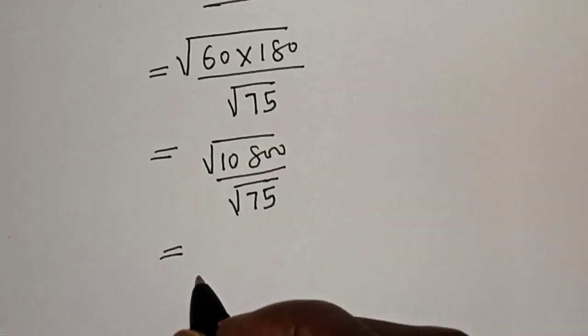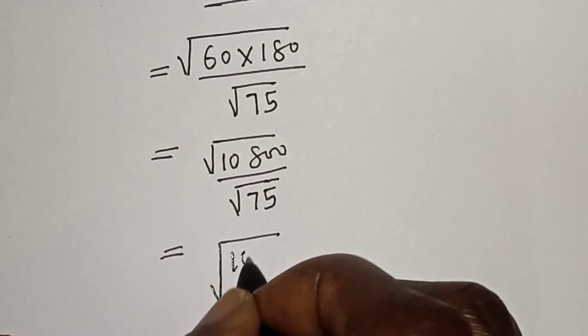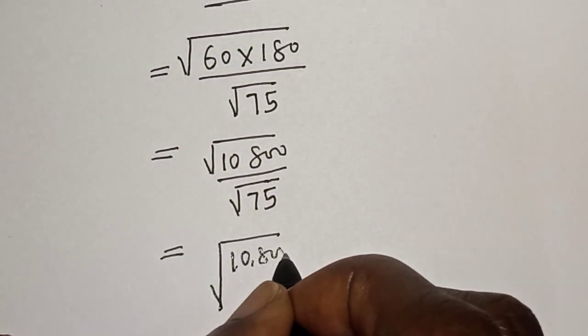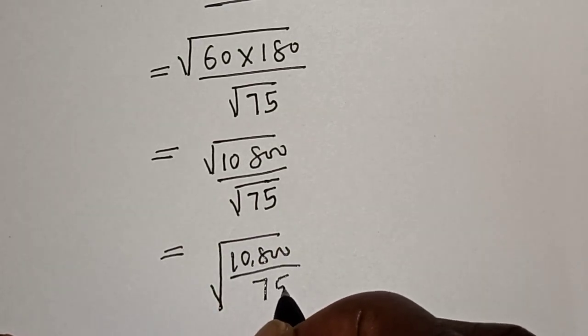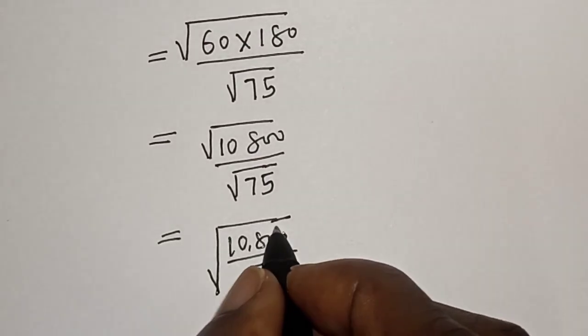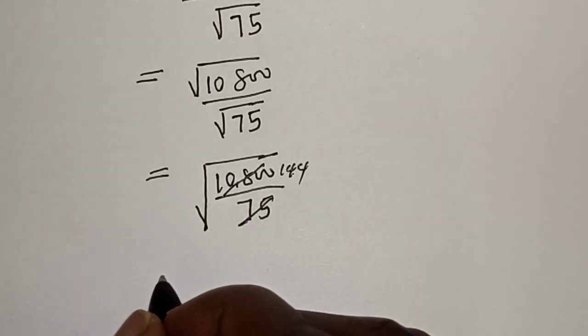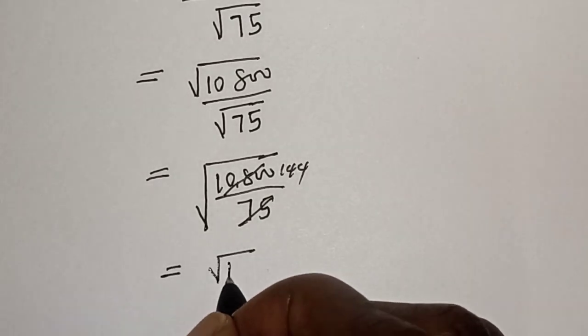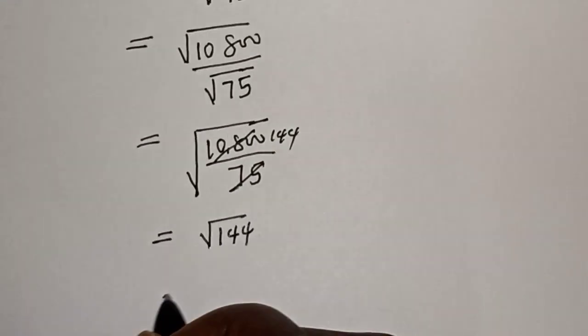This is equal to square root of ten thousand eight hundred over seventy five. Now if you divide this by this we have 144, so this is equal to square root of 144, and square root of 144 is equal to 12.